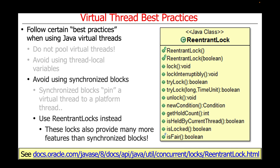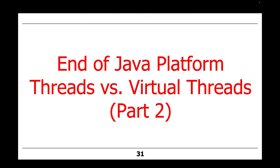Reentrant locks also provide many other features beyond what Java synchronized blocks offer. For example, they can be interrupted more flexibly and responsibly, they provide both timed and non-blocking methods to acquire locks without waiting if they're available, and they support more flexible lock acquisition and release protocols not bound by the scoped locking restrictions of code blocks in Java. That's the end of the second part of our discussion of Java platform threads versus Java virtual threads.